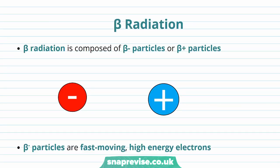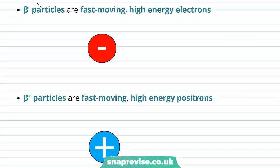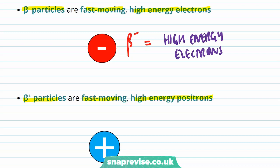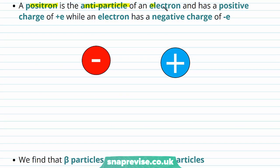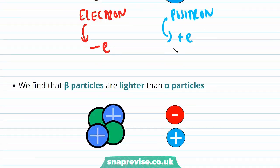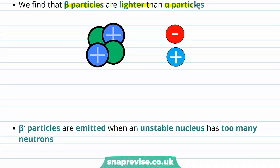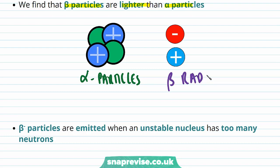Now we're going to look in a bit more detail at beta radiation. Beta radiation is composed of beta minus particles or beta plus particles. Beta minus particles are fast-moving high-energy electrons, and beta plus particles are fast-moving high-energy positrons, which are the anti-particle of electrons. A positron is the anti-particle of an electron and has a positive charge of plus e, while an electron has a negative charge of minus e. So beta particles are always charged, and we find that beta particles are lighter than alpha particles, because protons and neutrons have greater masses than electrons and positrons.